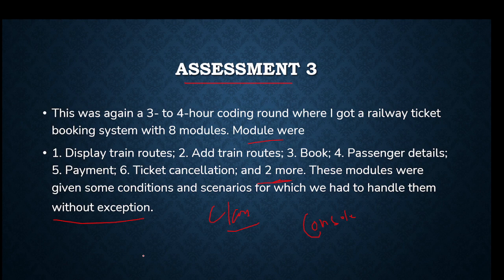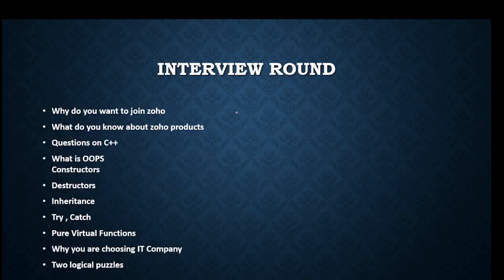You will be given some instructions based on how a customer can add a ticket, cancel a ticket, how to display the trains. These functionalities will be given to you in a proper PDF. In three to four hours, you have to develop an OOPs kind of project for all these conditions which you have to submit. This is the assessment 3 round.